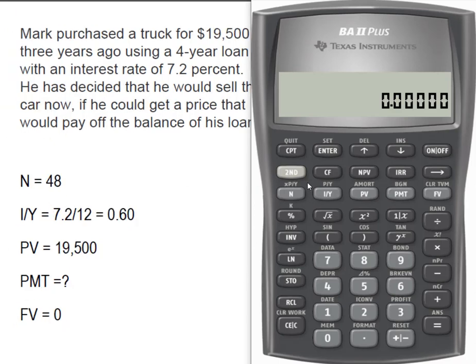We've got our time value of money keys cleared, and we know that N was 48. It was a 48-month loan with a monthly interest rate of 0.60. The present value, or the original amount of the loan, was $19,500, and we're going to pay the loan down to zero in the future. So we know that his original loan terms were 48 monthly payments of $468.76.